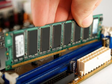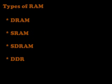When the power is switched off, all the information in the RAM will be lost. There are several types of RAM: DRAM, SRAM, SDRAM, and DDR.